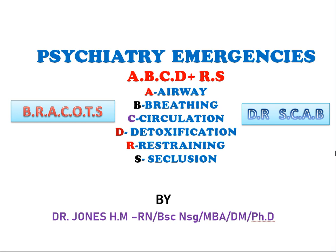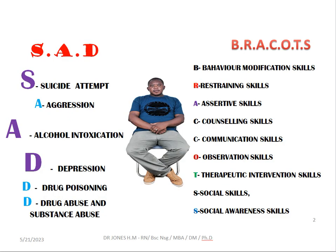Dr. Scab is a mnemonic for A, B, C, D, R, S — the elements or dimensions you need to look at when nursing someone with a psychiatry emergency. Away from this, we can also appreciate the types of conditions you are going to nurse in psychiatry emergency. We have SAD: S is for suicide attempt, A is for aggression and alcohol intoxication, and D is for depression, drug poisoning, and drug and substance abuse as psychiatry emergencies.